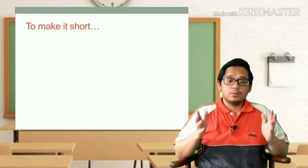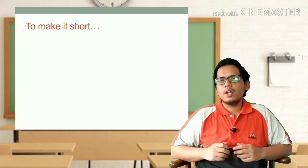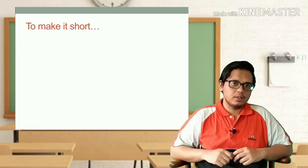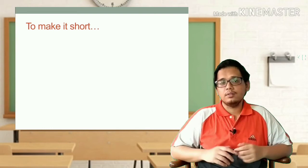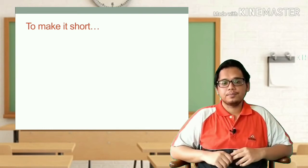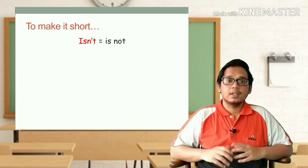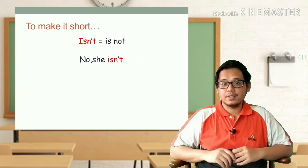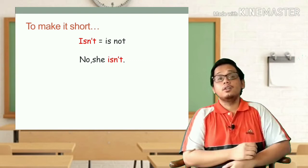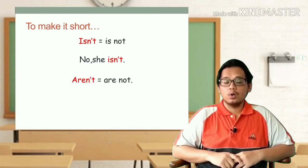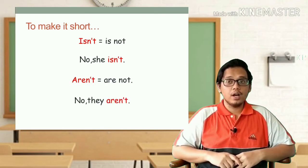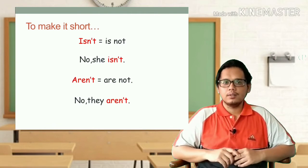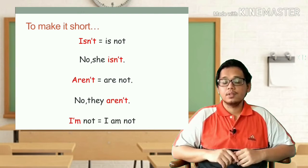Did you get that? So to make it short — you must be wondering what is 'isn't' and what is 'aren't', and sometimes in some sentences you might find 'I'm not'. These are contractions: 'isn't' comes from 'is not' — for example, 'No, she isn't' or 'No, she is not'. 'Aren't' comes from 'are not' — for example, 'No, they aren't' or 'No, they are not'. And 'I'm not' comes from 'I am not'.